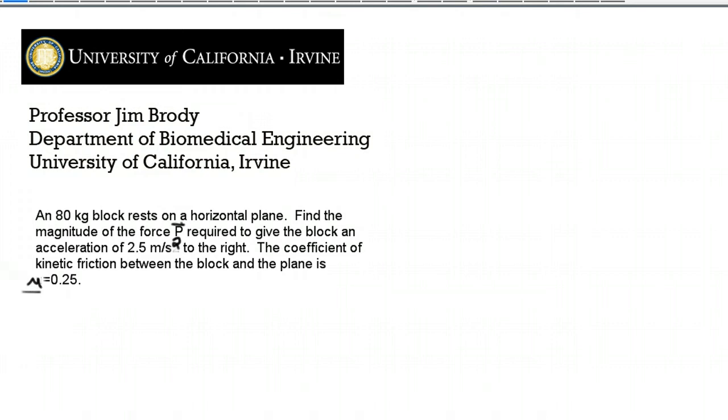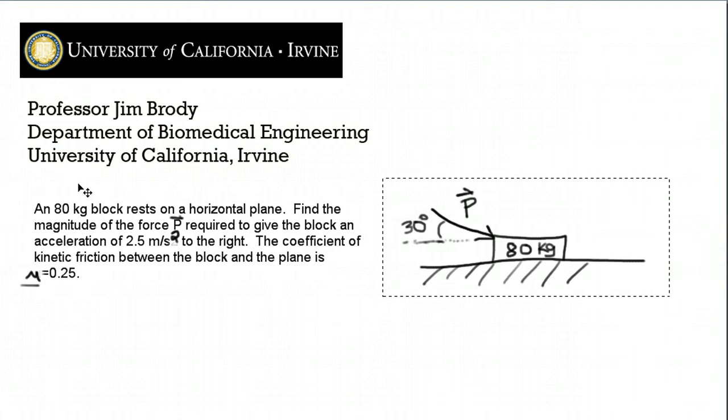Let's start out by drawing a picture of the problem. I've drawn out a picture here. I left this out before, but the force vector P is at a 30 degree angle. So the direction of P is at an angle of 30 degrees to the horizontal. There's a force P pushing down on the 80 kilogram block. We know the direction of P, but we don't know the magnitude. The problem is, find the magnitude of the force.